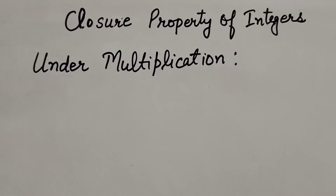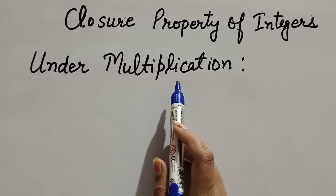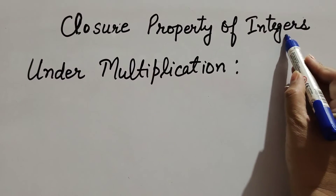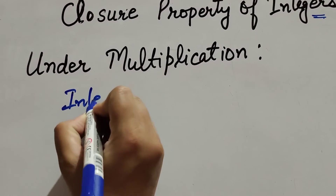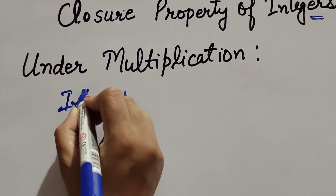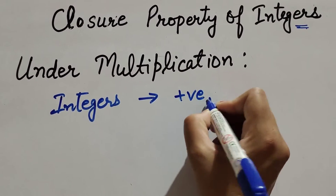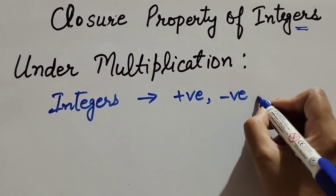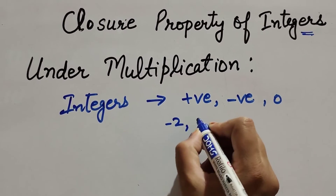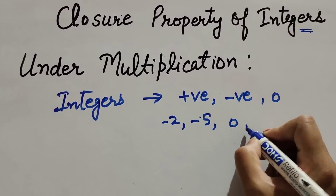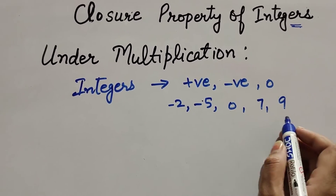Hello friends, welcome to my channel. In this video we discuss the closure property of integers under multiplication. Integers are numbers — they may be positive, negative, or zero. Numbers like minus two, minus five, zero, seven, nine, and so on are all integers.